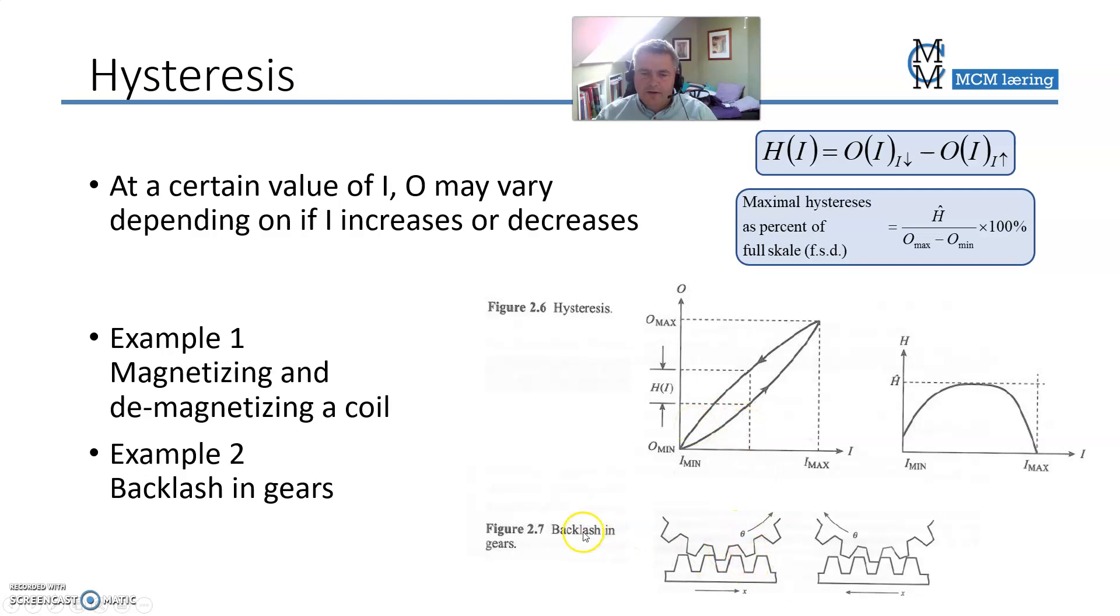The example here is with backlash in gears. When the wheel rotates from one rotating direction to the other, there is maybe a bit of slack that makes the output here, the position X, not being directly linked to the angle theta.